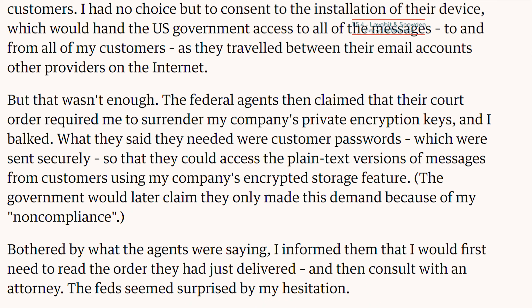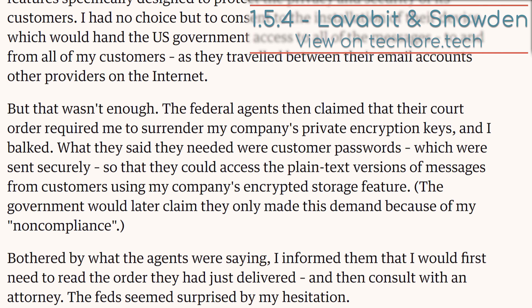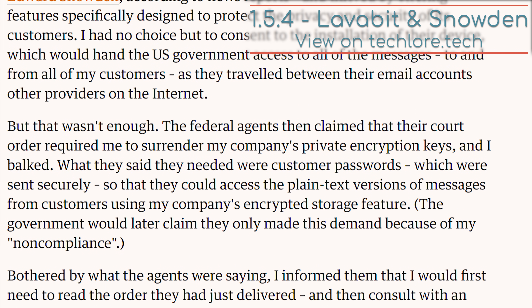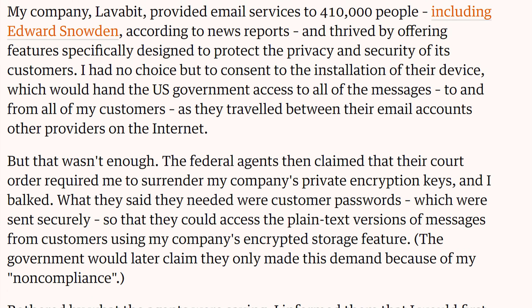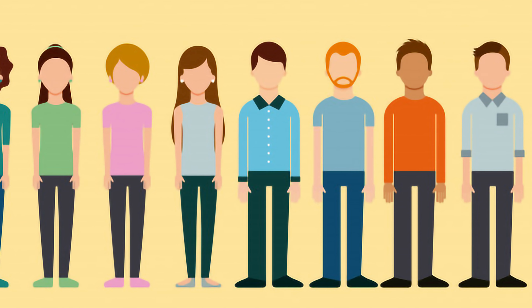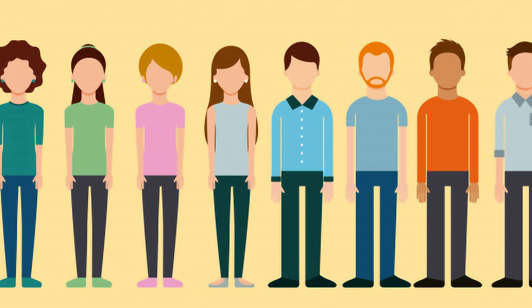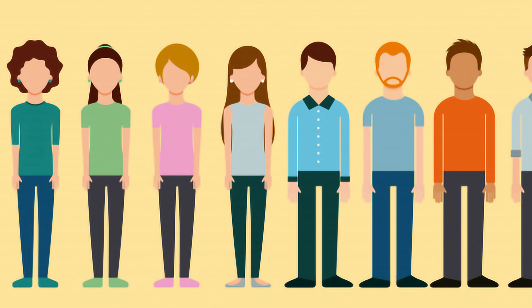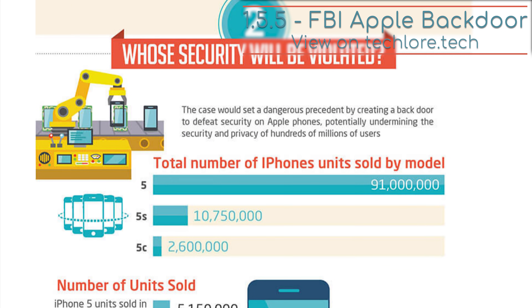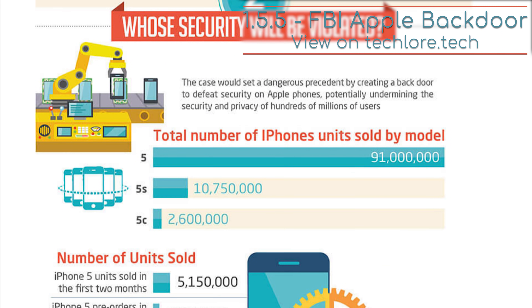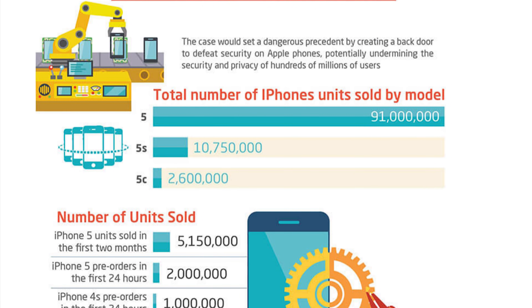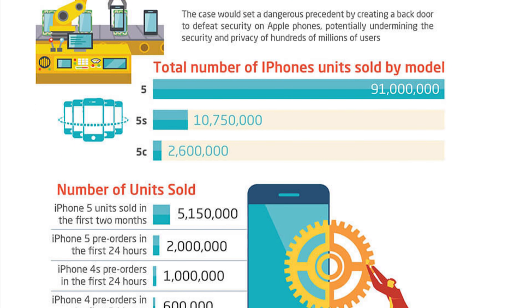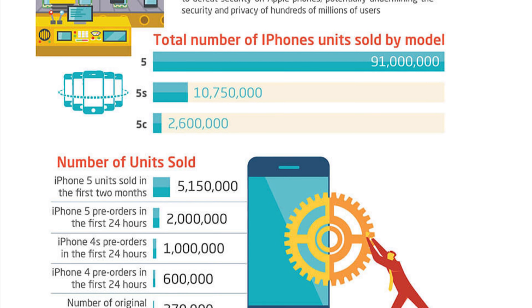When the FBI was trying to get Edward Snowden's emails on Lavabit, they forced Lavabit to hand over the SSL keys, which wouldn't just let the FBI access Snowden's keys, but everyone on Lavabit — giving access to all Lavabit users' private emails. When the FBI wanted Apple to unlock the single iPhone from the San Bernardino case, it meant installing a backdoor which would give them access to any iPhone around the world.